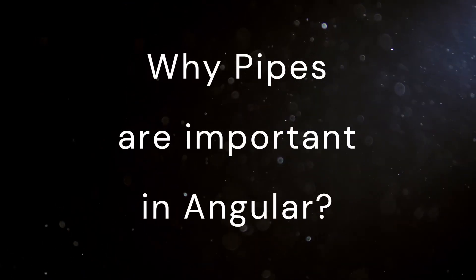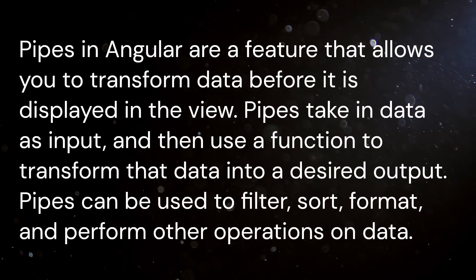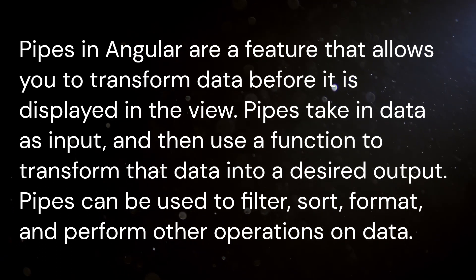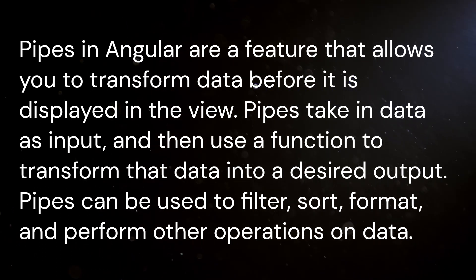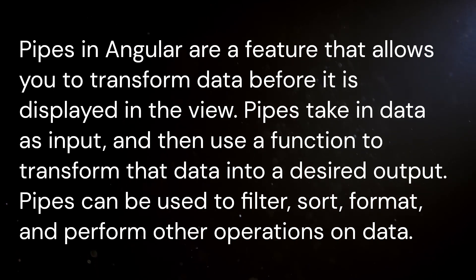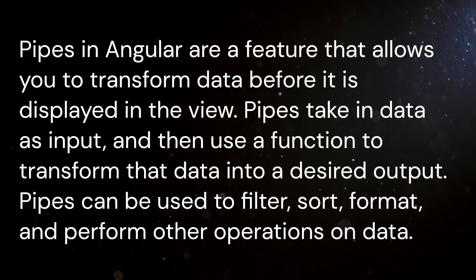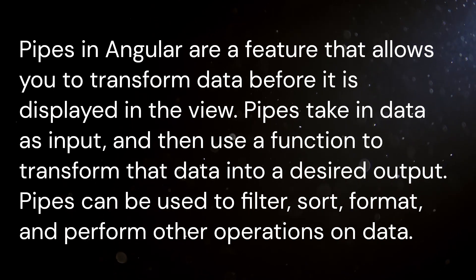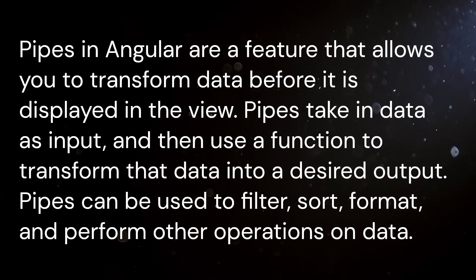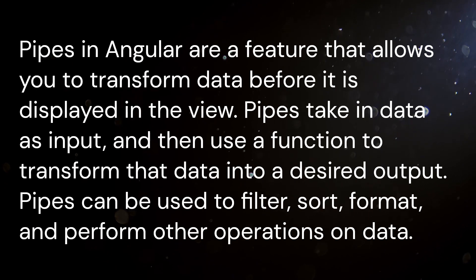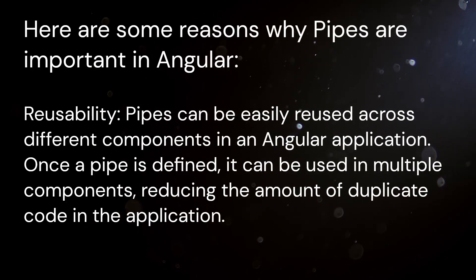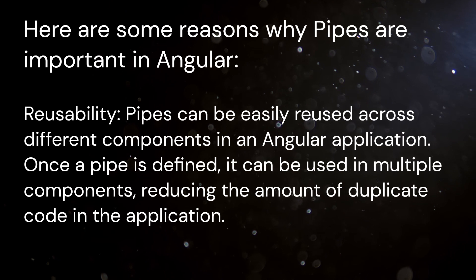Why are pipes important in Angular? Pipes in Angular are a feature that allows you to transform data before it is displayed in the view. Pipes take in data as input and then use a function to transform that data into a desired output. Pipes can be used to filter, sort, format, and perform other operations on data. Here are some reasons why pipes are important in Angular.